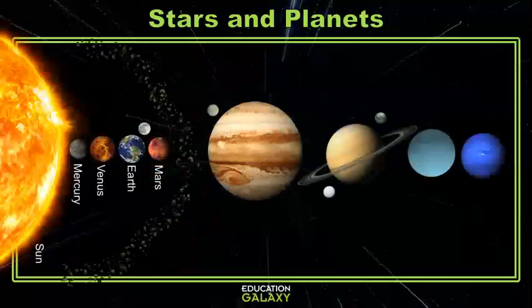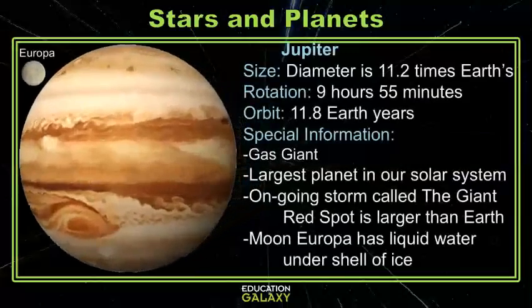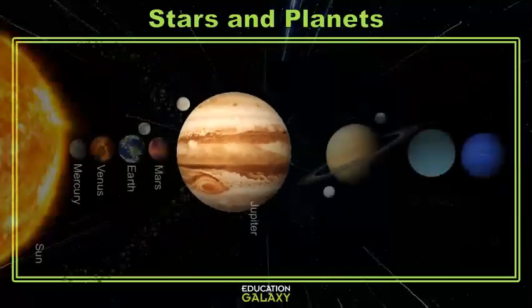And then we start looking at our big gas giant planets. The first one is Jupiter. Jupiter is the largest planet in our solar system. It's a gas giant and it could fit 11 Earths going across its diameter. It has a moon Europa, which has liquid water.